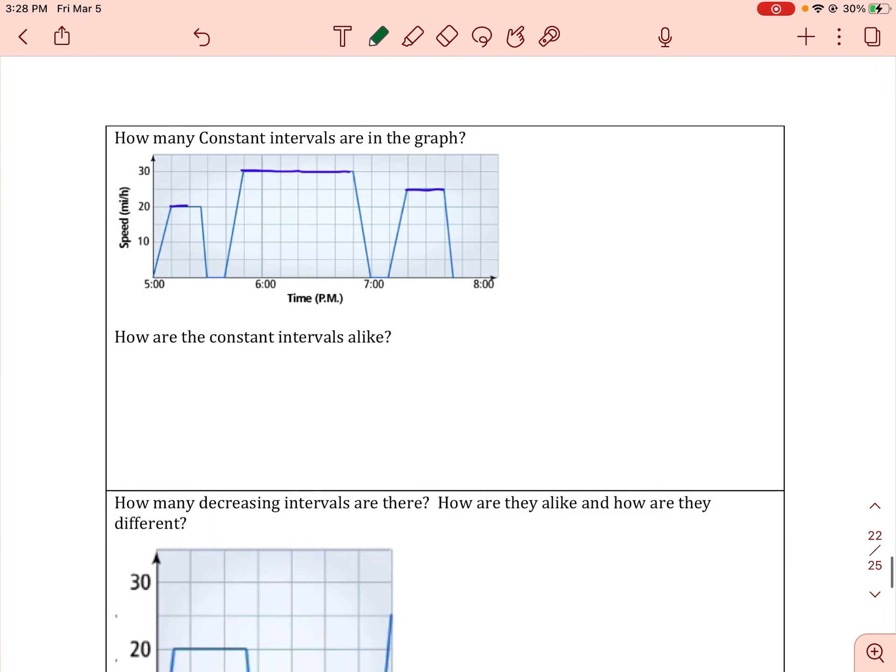How many constant intervals are in this graph? Well, here are the main ones up top. And many people forget about these right here at the bottom. So there are five constant intervals.